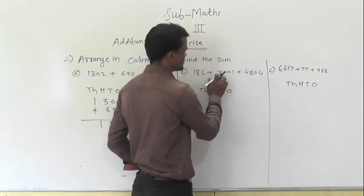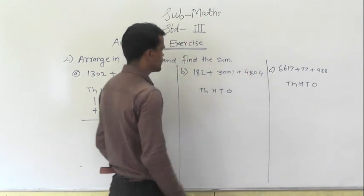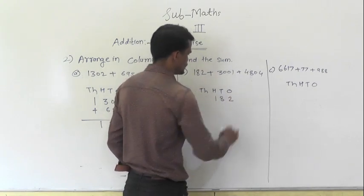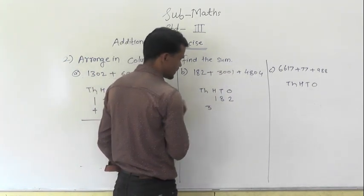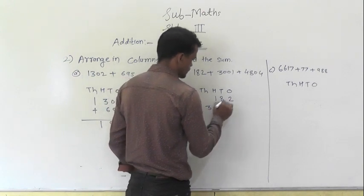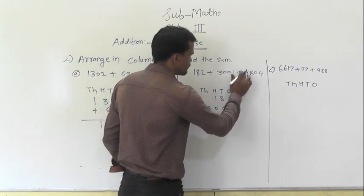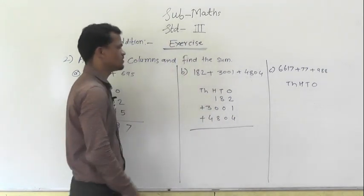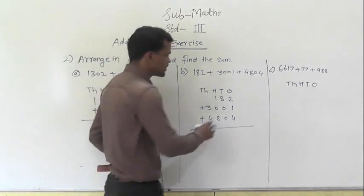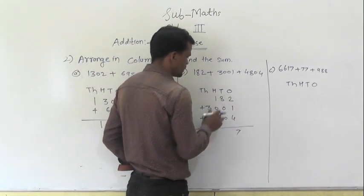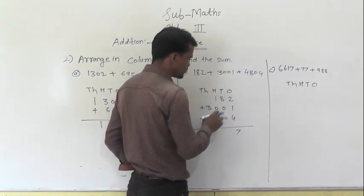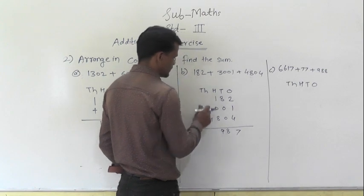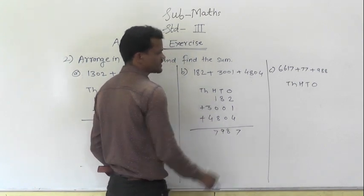Next: 182 plus 3001 plus 4804. Write 182, then 3001 with 3 under the thousands column, then 4804. Now add the digits: 2 plus 1 is 3, 3 plus 4 is 7, 8 plus 0 is 8, 0 is 0, 1 plus 0 is 1, 1 plus 8 is 9, then 3 plus 4 is 7. So 7987 is the answer.